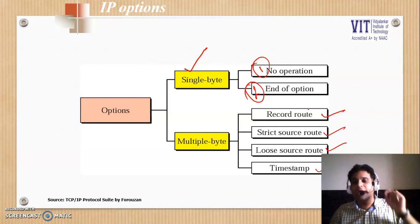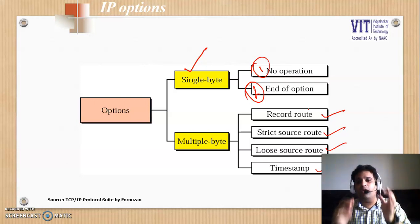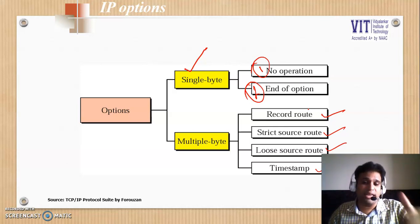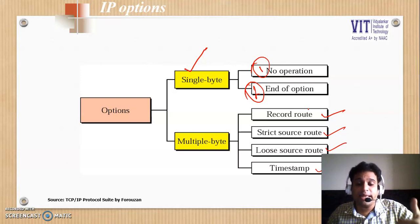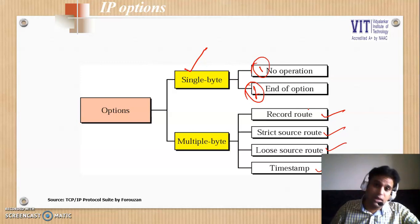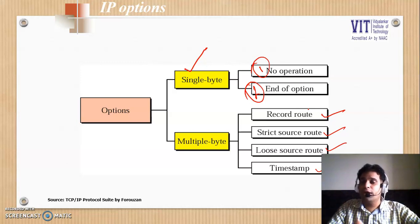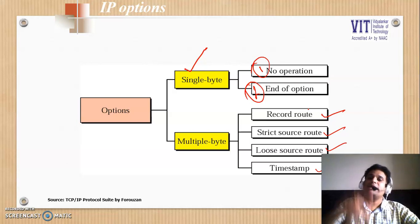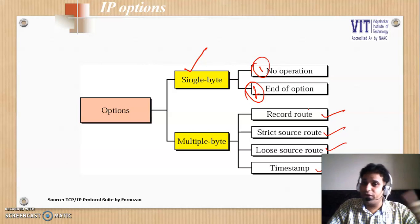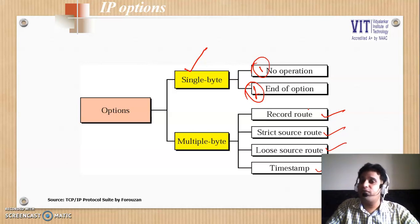In case of Strict Source Route, the sender specifies which routers the packet should visit. As the name says — strict — the packet can neither visit any extra router other than those specified, nor can it skip any of the routers mentioned. So if the route says A, R1, R2, R3, B, then the packet must follow exactly that path. If it visits any extra router or skips any mentioned router, it would be discarded.